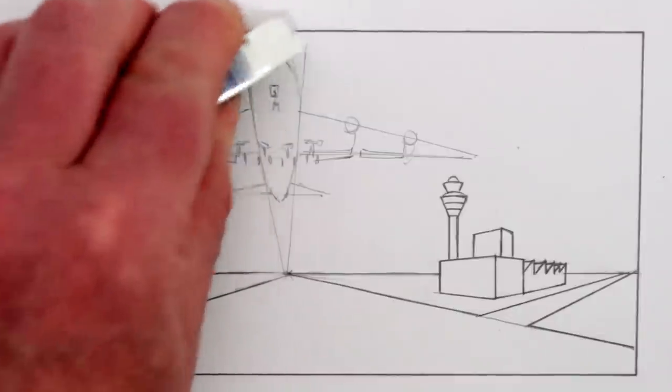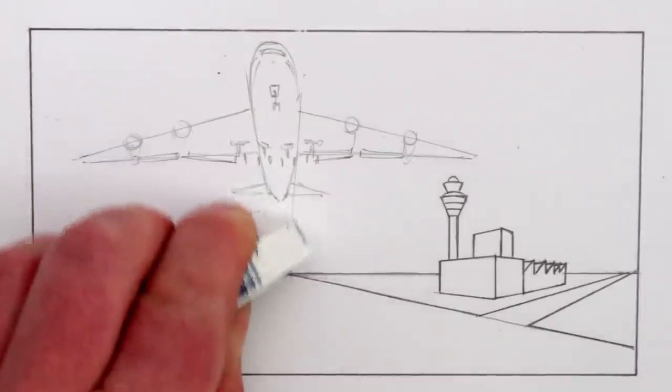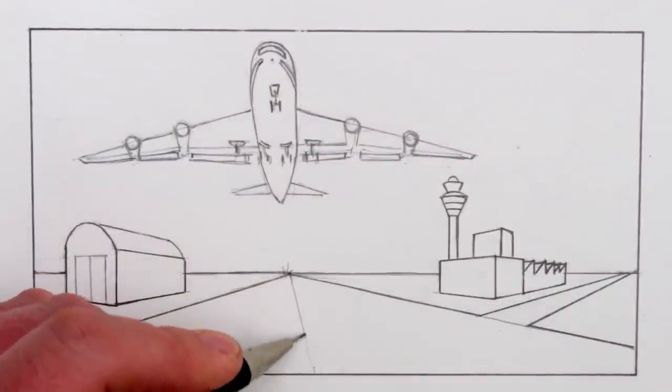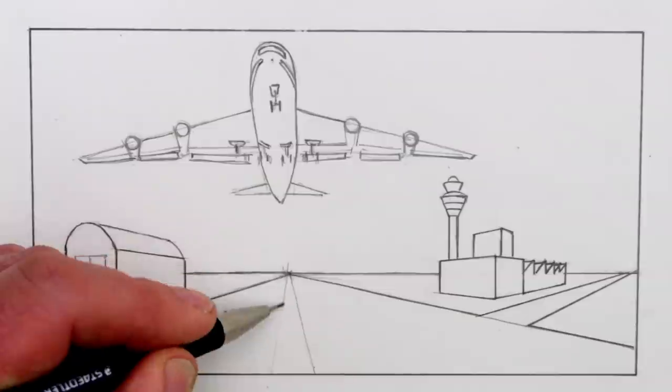Now I can erase some of the guidelines that we no longer need. Now we can draw two more diagonal lines coming straight towards us for the white line of the runway.